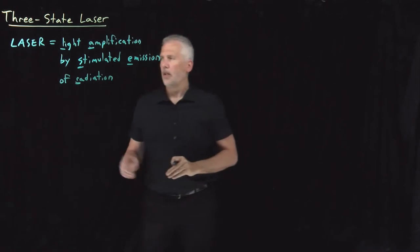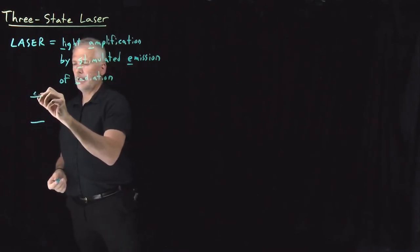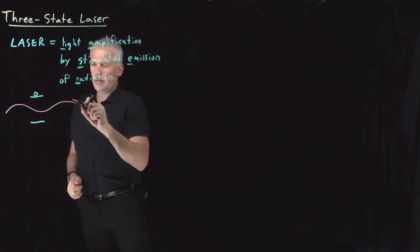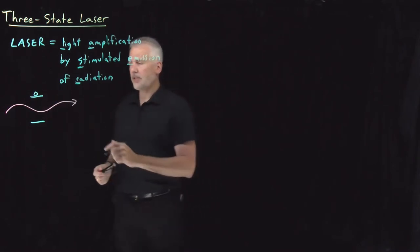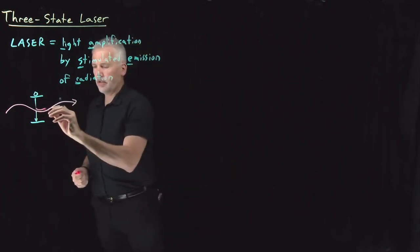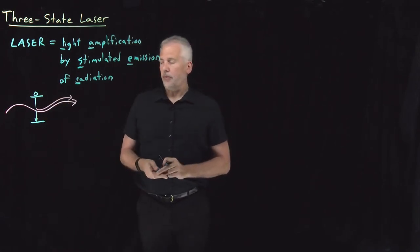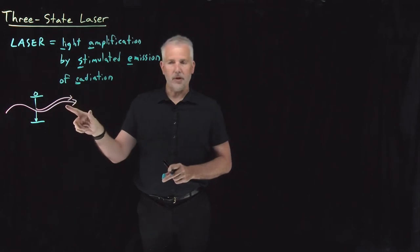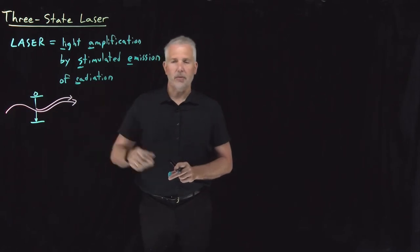Light amplification by stimulated emission of radiation. All that means is molecules in some excited state, when they get tickled by a photon of the appropriate wavelength — a photon of energy that matches the difference between two energy states — that can induce or stimulate the emission of another photon as this molecule falls down to the ground state. So we've amplified the light: one photon has become two, using stimulated emission, and radiation is just talking about the photon, the electromagnetic radiation.